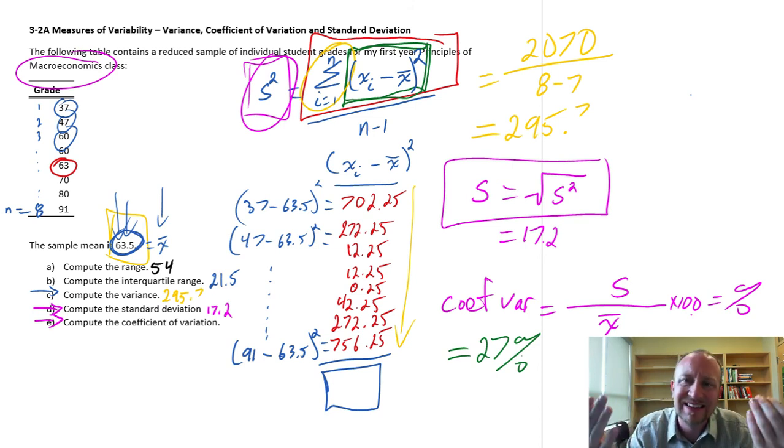Again, on its own, it doesn't convey a great deal of information. This measure is most useful, again, when you're comparing across data sets. Specifically, if you're trying to compare the degree of dispersion or variation between data sets that are measured in very different units.